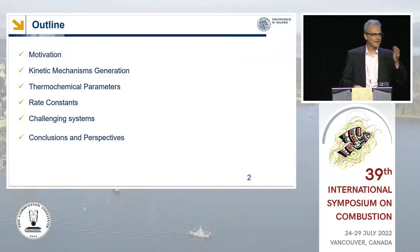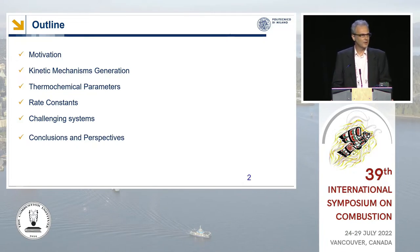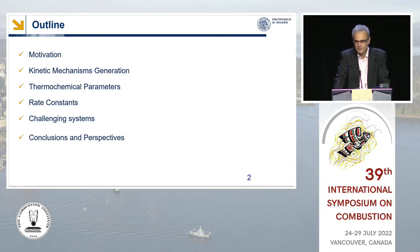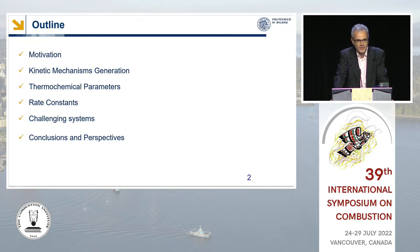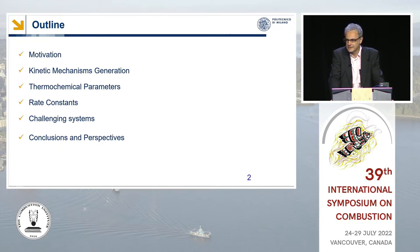I organized my talk in five moments. I'm going to give you the motivation about why it's worthwhile to automate chemical kinetics and what's the perspective of how far we can go. As you will see, there are three pillars on which automation rests: kinetic mechanism generation, determination of thermochemical parameters, and rate constant estimation. I will go through these three pillars to show you how far we have progressed, then dedicate some time to challenges and conclusions.